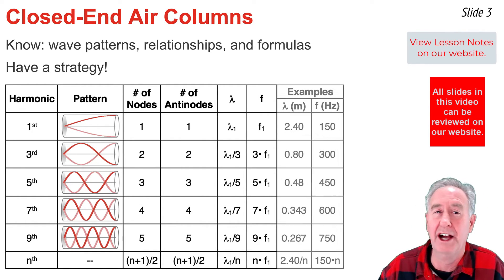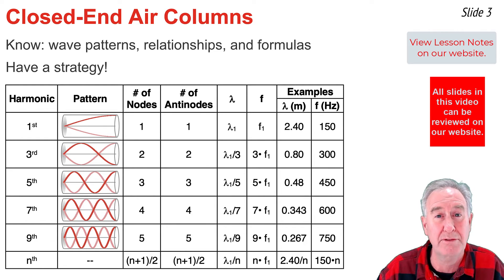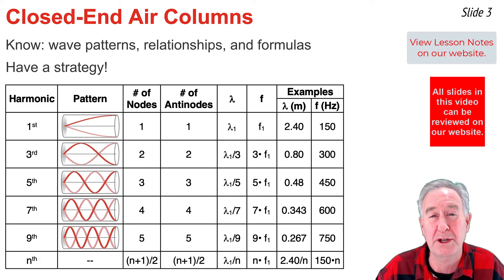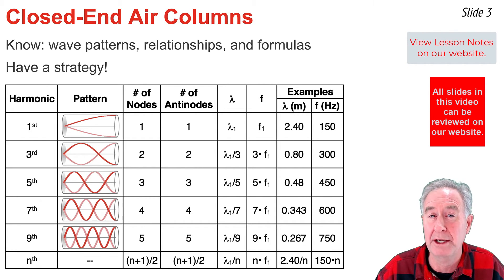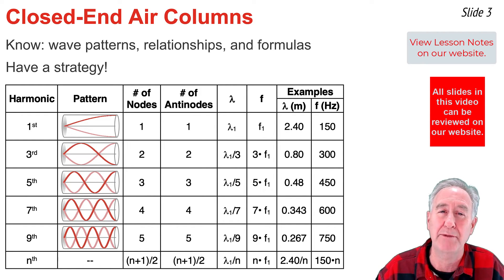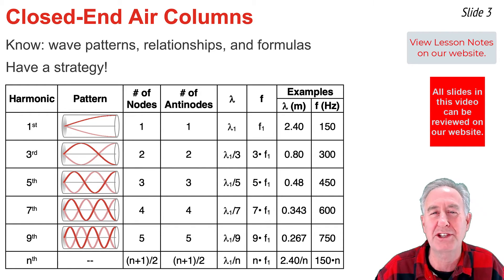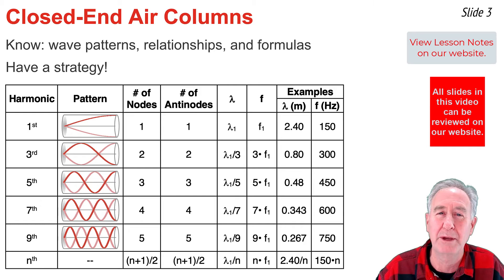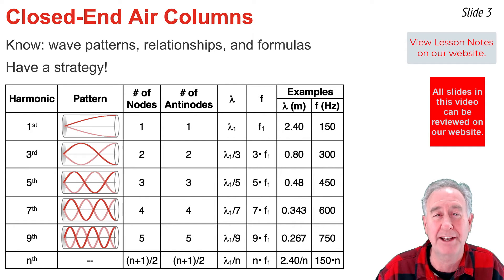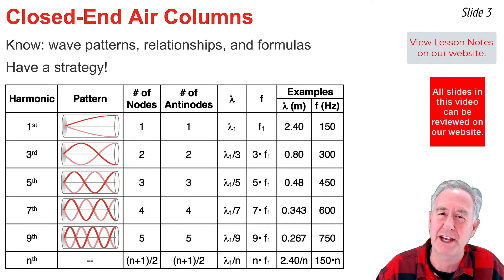In the sixth column, the frequency of the nth harmonic is found by taking the frequency of the first harmonic and multiplying by n. The seventh and eighth columns show how to find actual numerical values, based upon a 60 cm closed-end air column with a first harmonic frequency of 150 Hz. For the wavelength of the first harmonic, I take 60 cm equal to 1/4 wavelength, multiply both sides by 4, and get 240 cm or 2.40 m. The wavelengths of the other harmonics are 2.40 m divided by 3, 5, 7, and 9, and the frequencies are 150 Hz multiplied by 3, 5, 7, and 9.